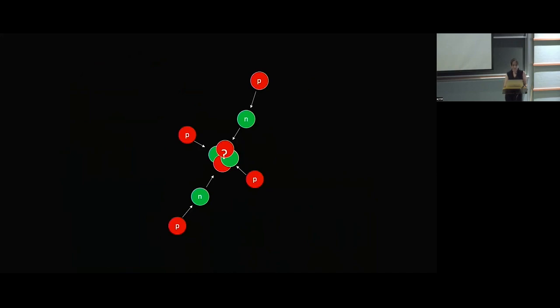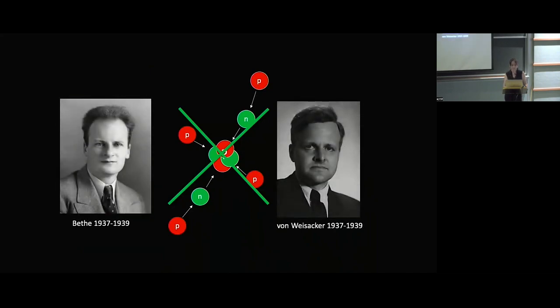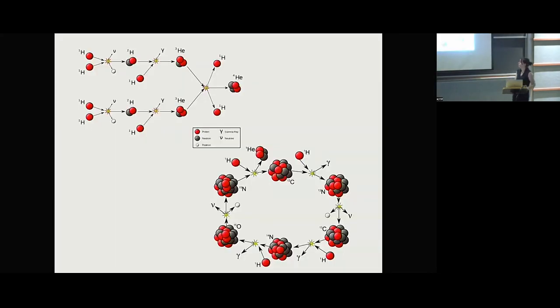And the answer to the last problem, namely how you get all these four particles together in the same place at the same time, is basically you actually don't. Instead, the helium is built progressively in chain reactions that only ever involved the collision of two particles with one another at any one time, which is a lot easier. And there are several ways of doing that which were worked out by Bethe and Weizsäcker between 1937 and 1939.